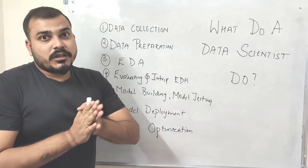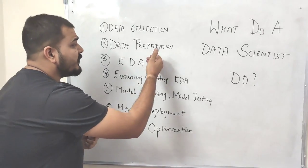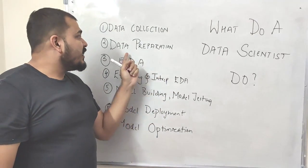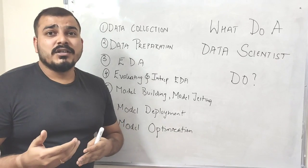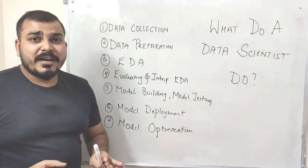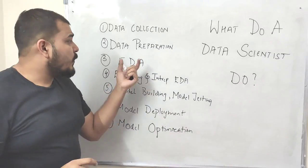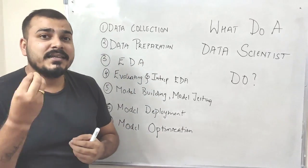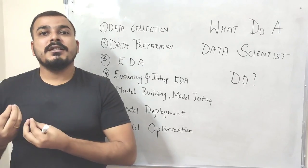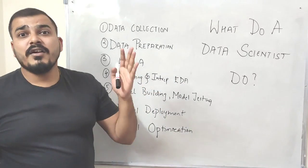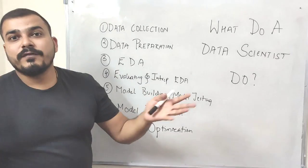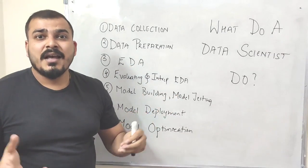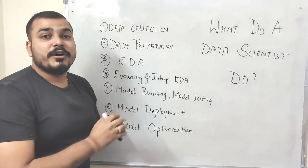After data preparation we move to exploratory data analysis (EDA). Before EDA, we perform feature engineering activities — in data preparation we handle null values and clean the data, and feature engineering is involved in both stages. In EDA we apply statistical analysis to understand the data, which is very important for any machine learning use case. With millions of records, we look at visualization using probability density functions, histograms, and libraries like seaborn and matplotlib.